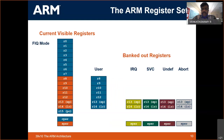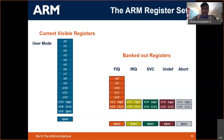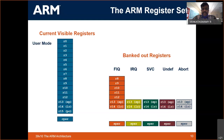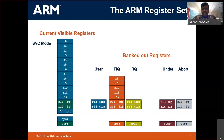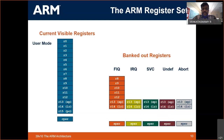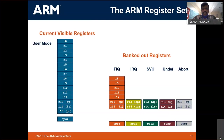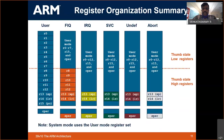For example: from user mode you go to fast interrupt mode, come back to user mode, then go to interrupt mode — each mode copies different registers. Then supervisor mode, back to user mode; undefined mode, back to user mode; abort mode, back to user mode — and so on. This is the complete register bank structure in the ARM microprocessor.